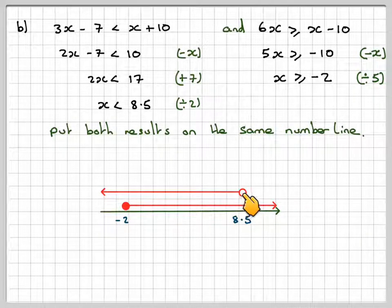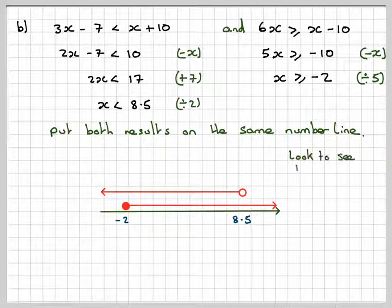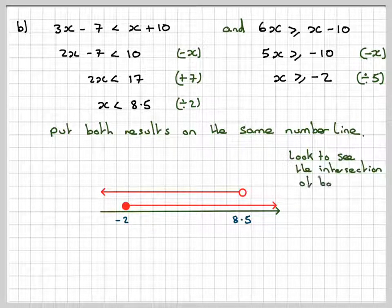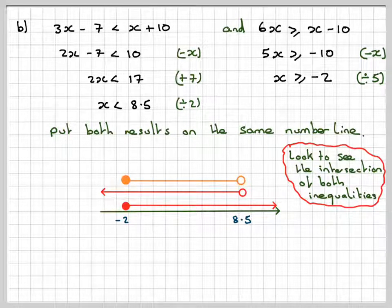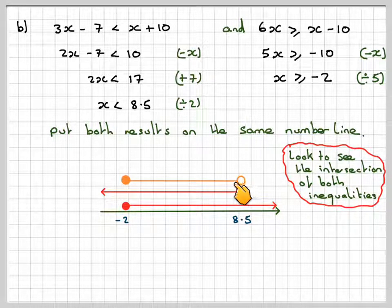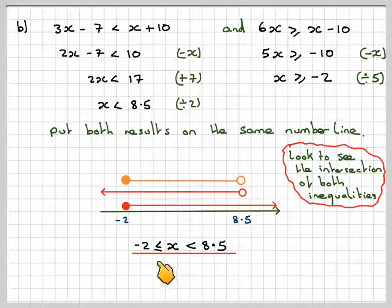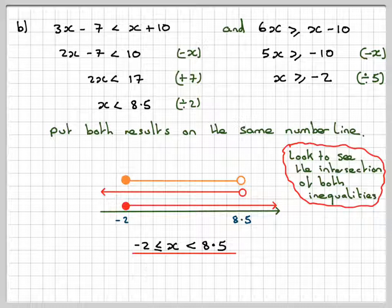Where's the bit in common? The intersection of both inequalities is from here to here. This one will be full and this one will be open, and the line goes there. So the answer is that x has to be greater than or equal to minus 2 but less than 8.5.